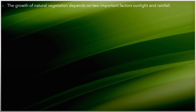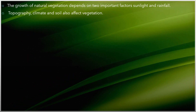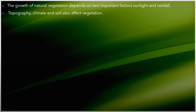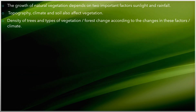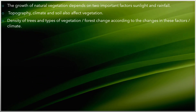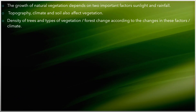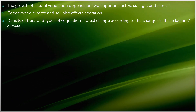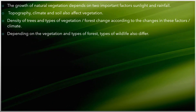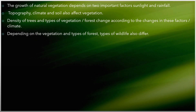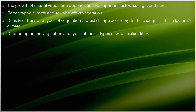Topography, climate, and soil also affect vegetation. The density of trees — meaning number of trees — and the types of vegetation or forest change according to changes in these factors. Depending on the vegetation and types of forest, types of wildlife also differ.